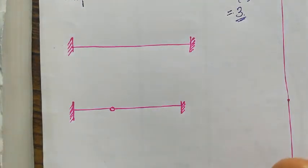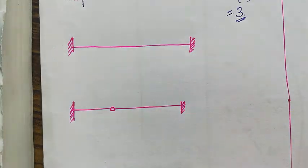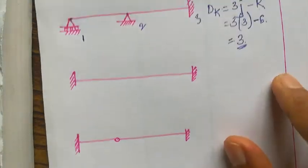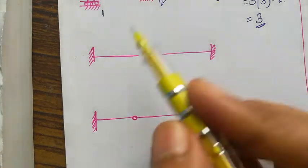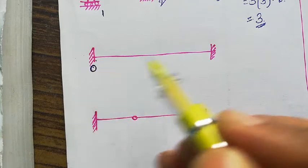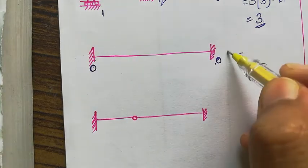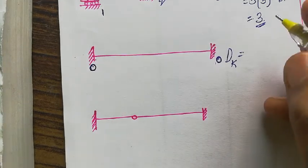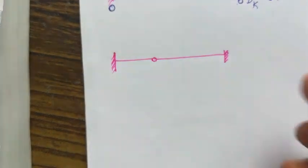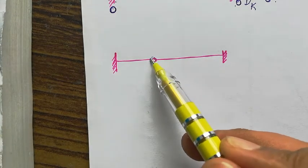Next, for the fixed beam, you can solve directly or use the previous equation. A fixed support has zero degrees of freedom. Since both supports are fixed, the degree of kinematic indeterminacy is zero.